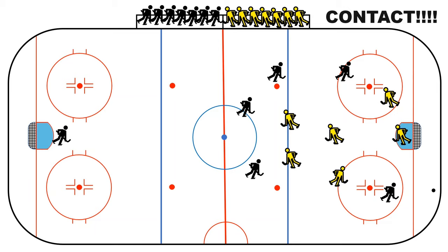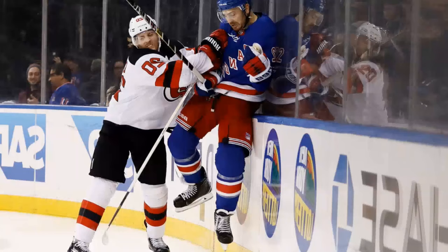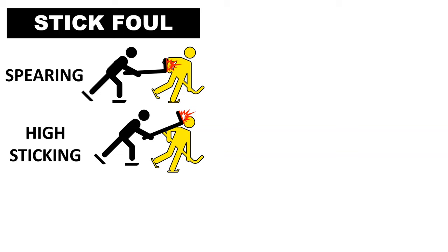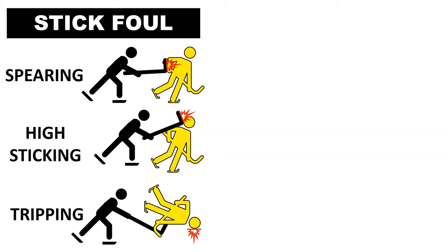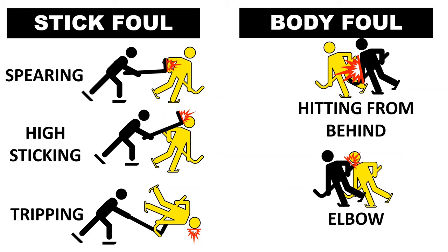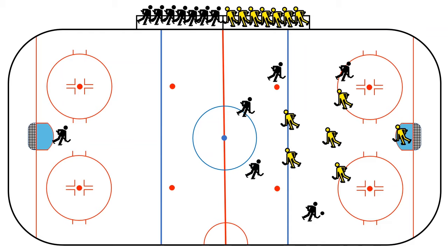One of the most fun parts of the game is that it is a contact sport. Players can come and push opponents — that is very common. However, there are things players cannot do. Stick fouls include spearing (hitting another player with your stick), high-sticking (hitting the head), and tripping (using the stick to trip a player). Body fouls include hitting a player from behind, and elbowing. There are many such fouls.